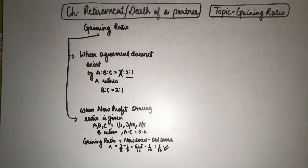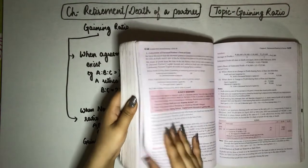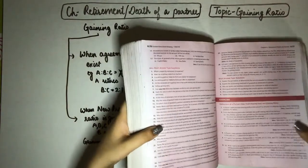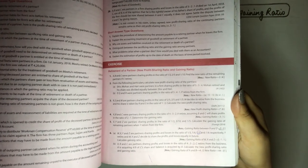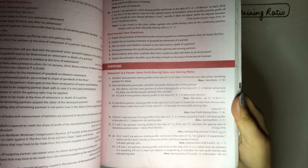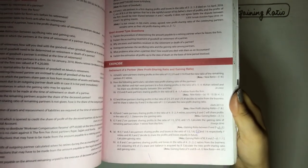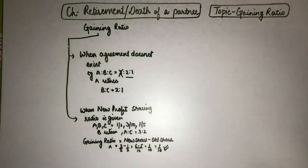So now we will do book question number 6 — TS Grewal question number 6. In part A, we have partners W, X, Y, Z. Y is retired and the future ratio is equal. We have to calculate the gaining ratio. In part B, A, B, C are three partners, and C is retired.